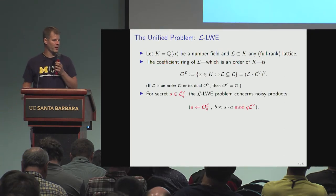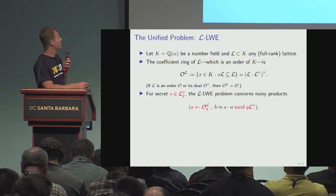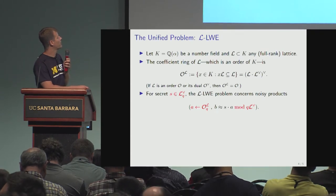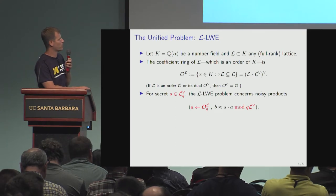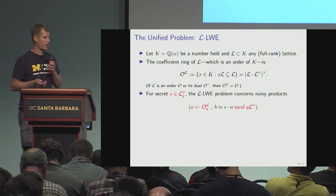This LLWE problem we define is as follows: It's concerned with a secret from L dual, and a random A is drawn from the associated coefficient ring of L. Then you get S times A with some noise, modded by Q times L dual.